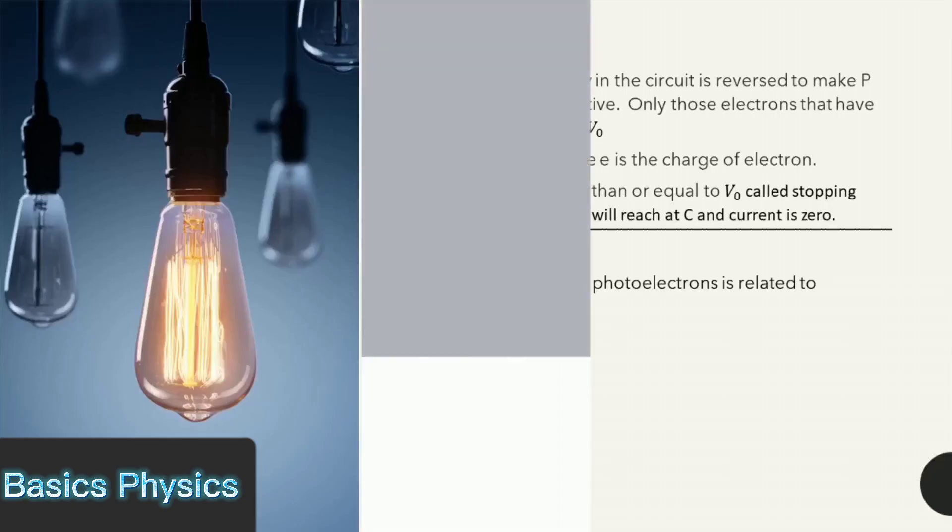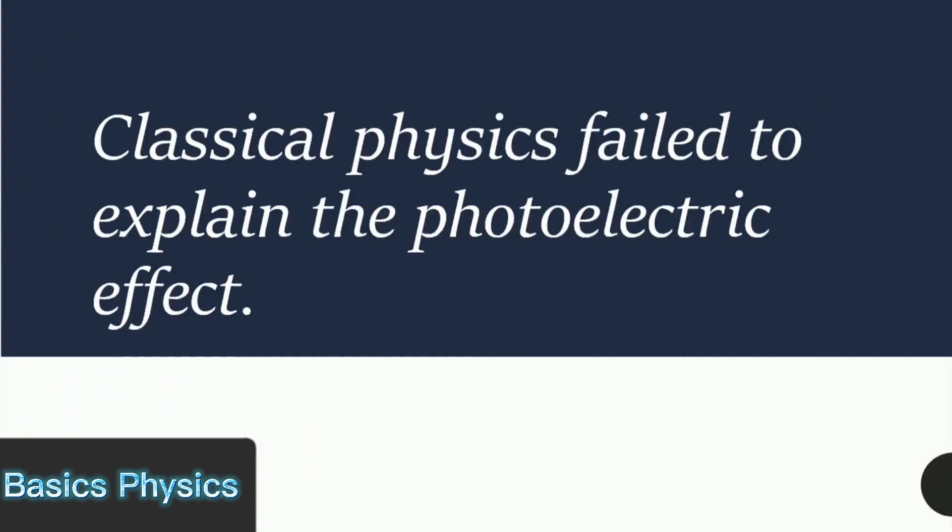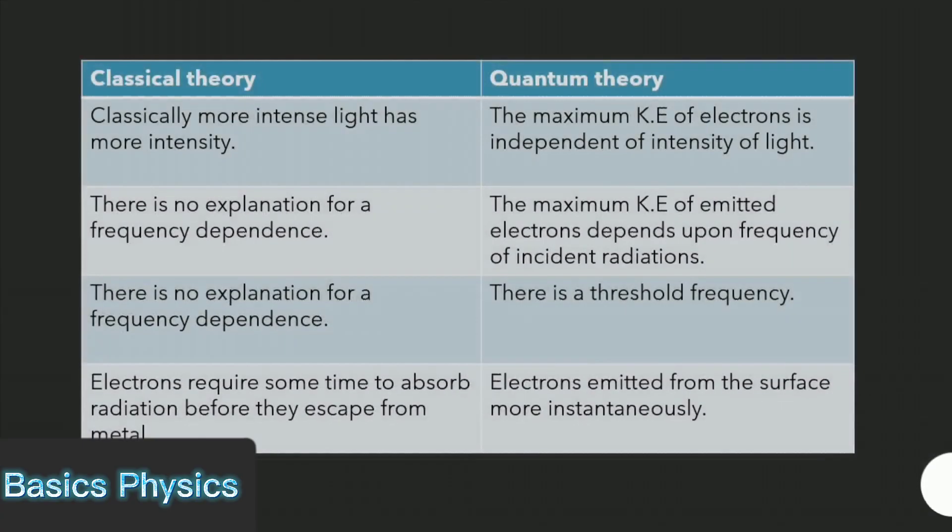Classical physics failed to explain the photoelectric effect. Classically, more intense light has more intensity. There is no explanation for a frequency dependence. Electrons require some time to absorb radiation before they escape from metal.